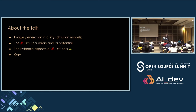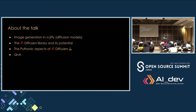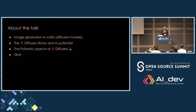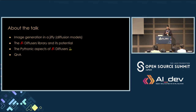About the talk: I'm going to talk about image generation and video generation — but not the mathematics side of it. How you can do image generation and video generation for your own projects, using the Diffusers library that I help maintain at HuggingFace. I'm going to talk about the library and its potential, discuss a couple of Pythonic aspects of the library, and hopefully we'll have time for Q&A.